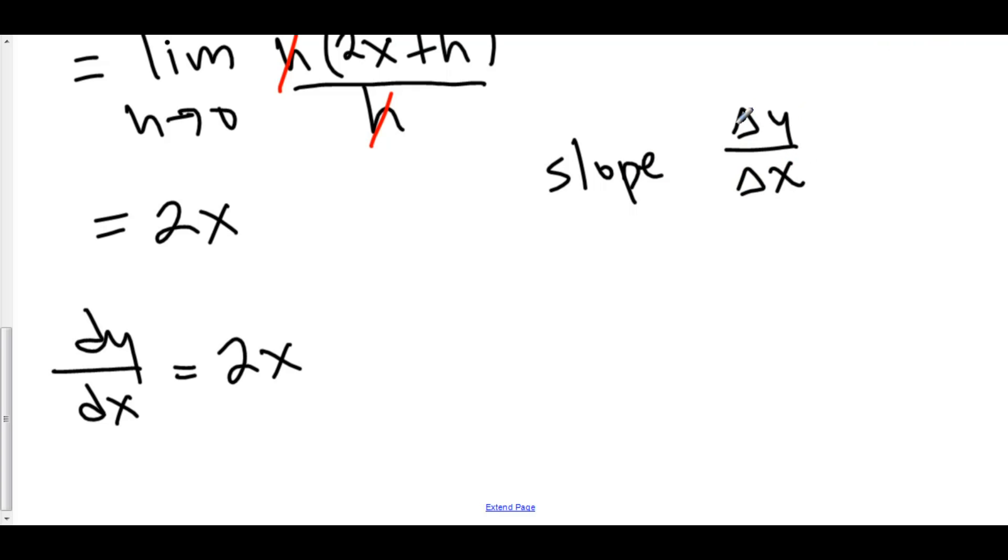slope was defined as delta y over delta x, where delta y was some change in y and delta x is some change in x. All we've done here is we've changed our delta to a d. Delta is algebraic. d is what we use in calculus. And they mean slightly different things.